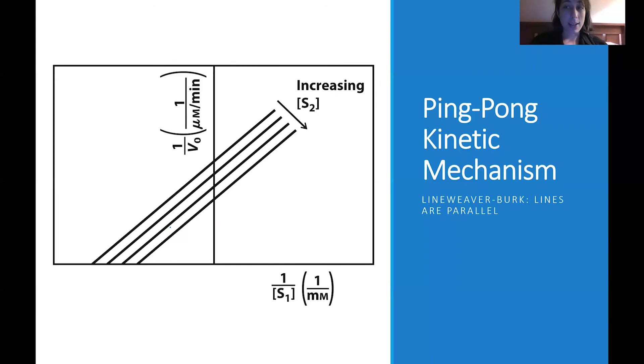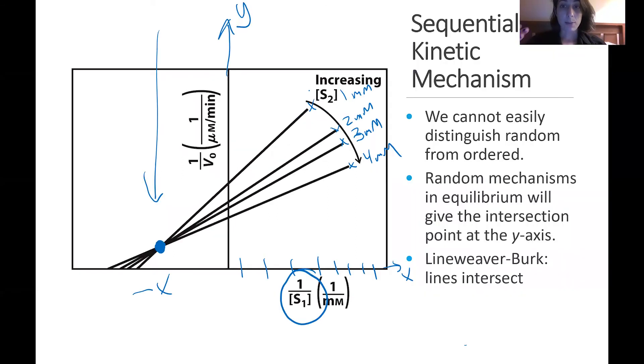Similarly though, as you increase the concentration of substrate 2, you see the slope changing in a way in which the lines decrease down. So that part is held the same, but we have parallel lines instead. So just by visualization, you can determine a ping-pong mechanism versus a sequential mechanism using this Lineweaver-Burk.